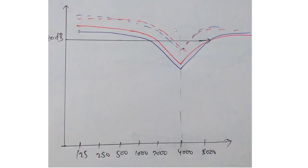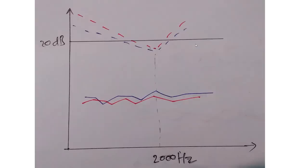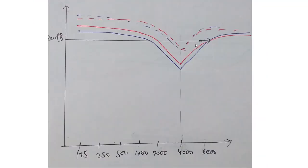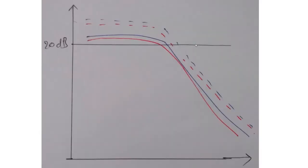In this audiogram, air conduction for both left and right ears is normal, and bone conduction is also normal except at 4000 hertz, where there is a sudden deep notch. A notch at 4000 hertz in both air and bone conduction is specific for noise-induced hearing loss — sounds like consonants are missing. This is the second most common type of hearing loss worldwide. This is distinct from Carhart's notch, which appears at 2000 hertz in bone conduction only.